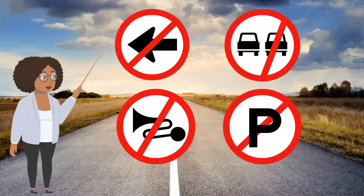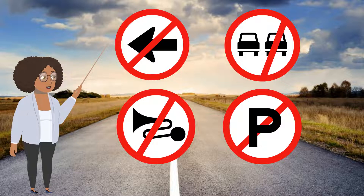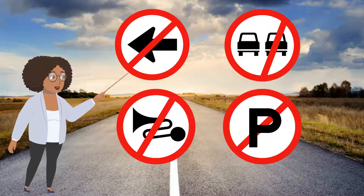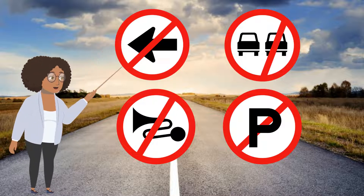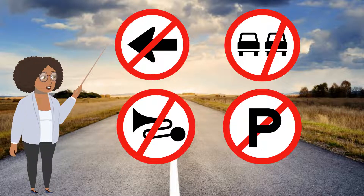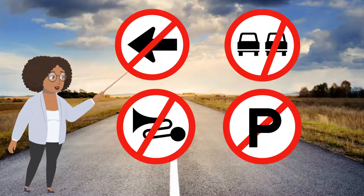What exactly are prohibition signs? These signs tell you what you may not do, or which class of road users may not use a particular part of the roadway. The signs are all white disc-shaped signs with a red border. Temporary versions have a yellow disc.